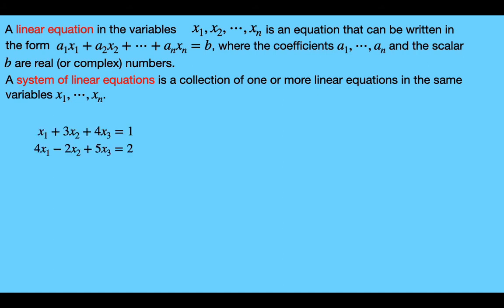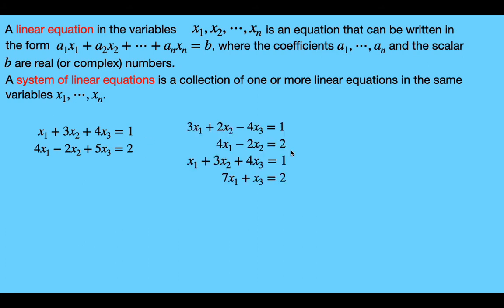Here's an example of a system. This has two equations in the variables x sub 1, x sub 2, and x sub 3 — so there are three variables and two linear equations. Here's another example of a system of linear equations. This has four linear equations in three variables: x sub 1, x sub 2, and x sub 3.